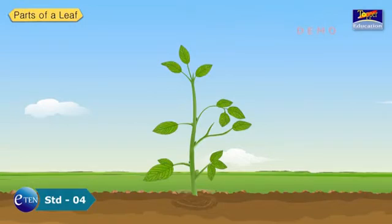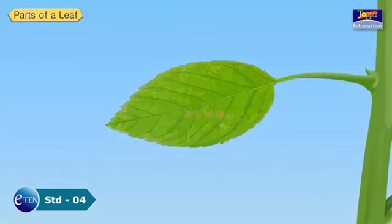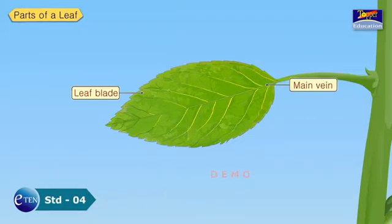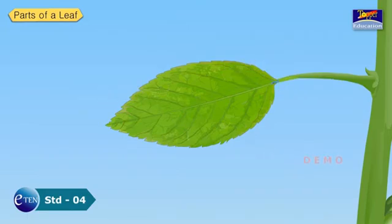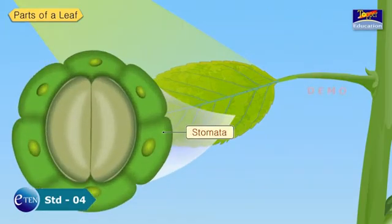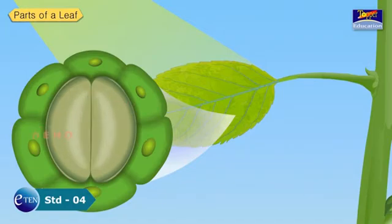Parts of a Leaf. If you observe the leaves closely, they are all flat. The flat part of a leaf is called the leaf plate. Each leaf usually has one main vein and many side veins. They carry water and minerals to all the parts of the leaf. The underside of a leaf has many tiny pores called stomata. These pores are so small that we cannot see them with the naked eye. The stomata let air flow in and out of the leaf.